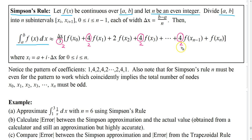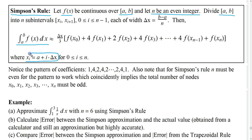So it's very similar to the trapezoidal rule, just as easy to use, but as we'll see it's much more accurate. You can calculate the nodal values x0, x1, x2, and so on using this rule. So x0 would be a plus 0 times delta x, or just a. x1 would be a plus 1 delta x, x2 would be a plus 2 delta x, x3 would be a plus 3 times delta x, and so on.